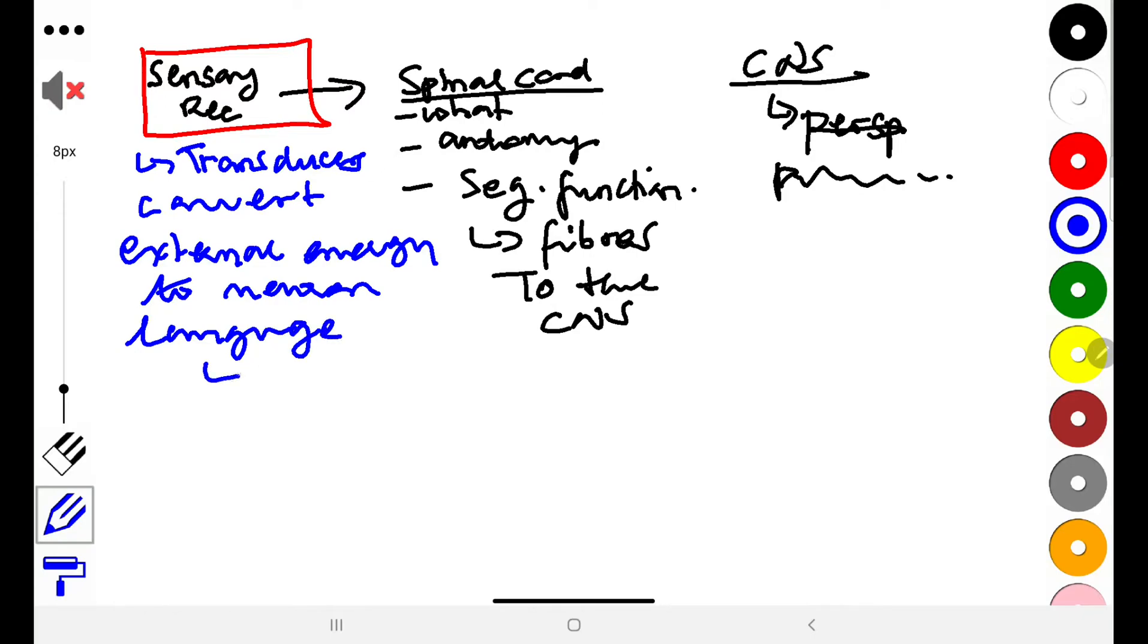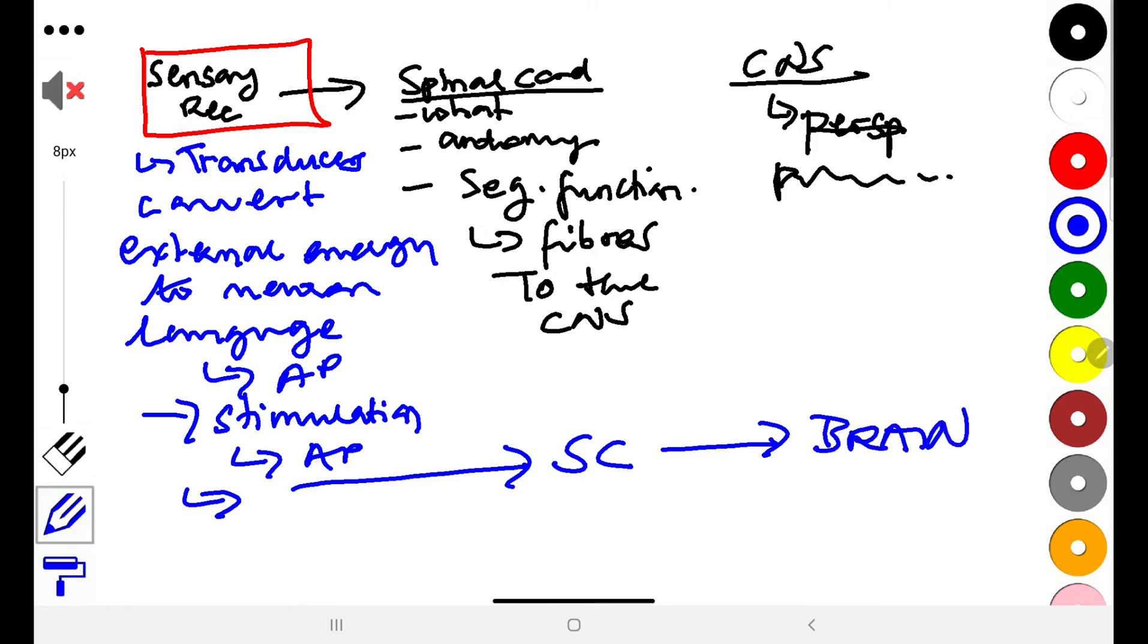When we talk about the neuron language, we're really talking about action potential. We're looking at parts of your body that are able to get stimulated. Upon stimulation, they will initiate an action potential, and this action potential will then go through to the spinal cord and even reach the brain areas for perception.